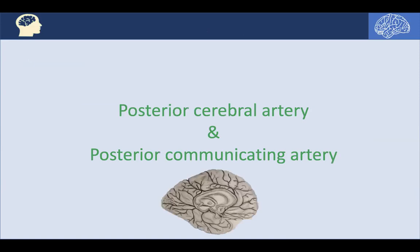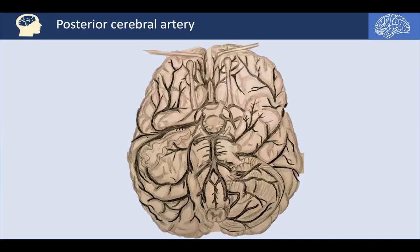The posterior circulation consists of the posterior cerebral artery from the circle of Willis. We also have the posterior communicating artery, which is a branch from the internal carotid artery. We have two vertebral arteries that unite in front of the pons to form the basilar artery, and then the basilar artery gives rise to two terminal branches, the two PCAs — one on the right and one on the left — to supply the posterior and medial surface of the hemisphere.